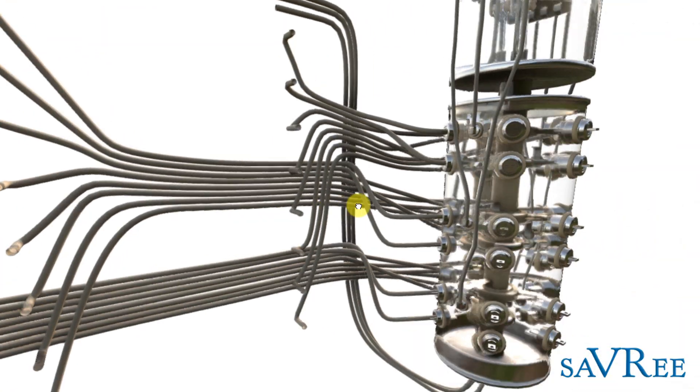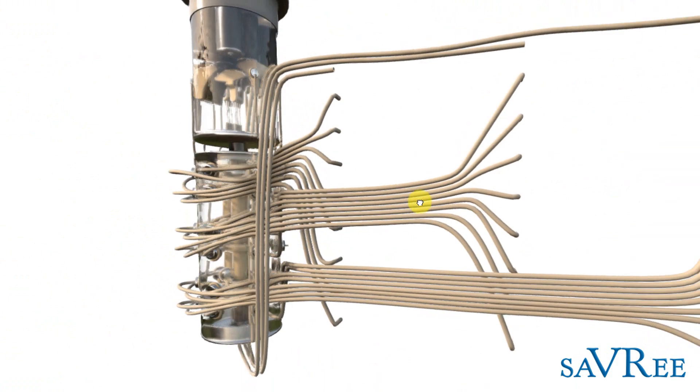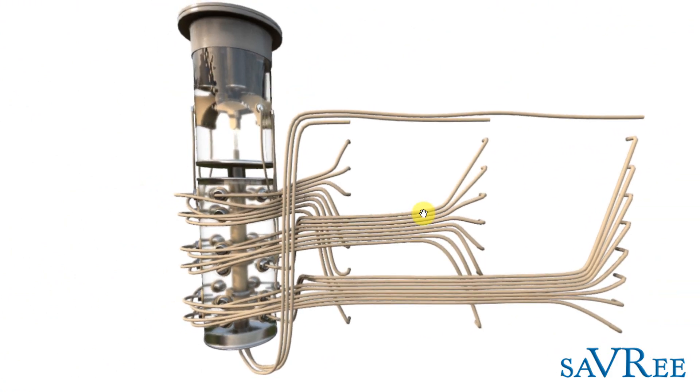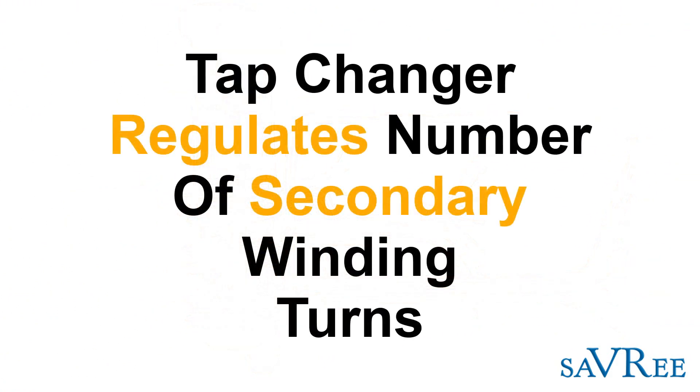So that's three separate phases and they're all on the secondary side of the transformer, and we're going to use the tap changer for regulating the number of turns on the secondary windings.